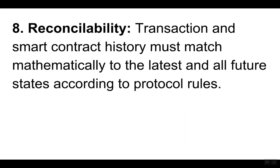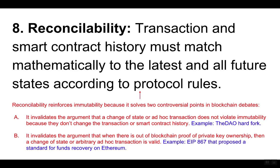Eight, reconcilability. Transaction and smart contract history must match mathematically to the latest and all future states according to protocol rules. Reconcilability reinforces immutability because it solves two controversial points in blockchain debates. First, it invalidates the argument that a change of state or ad hoc transaction does not violate immutability because they don't change the transaction or smart contract history — an example of this was the DAO hard fork. Second, it invalidates the argument that out-of-block proof of private key ownership makes a change of state or arbitrary ad hoc transaction valid — an example is EIP867, which proposed a standard for funds recovery on Ethereum.